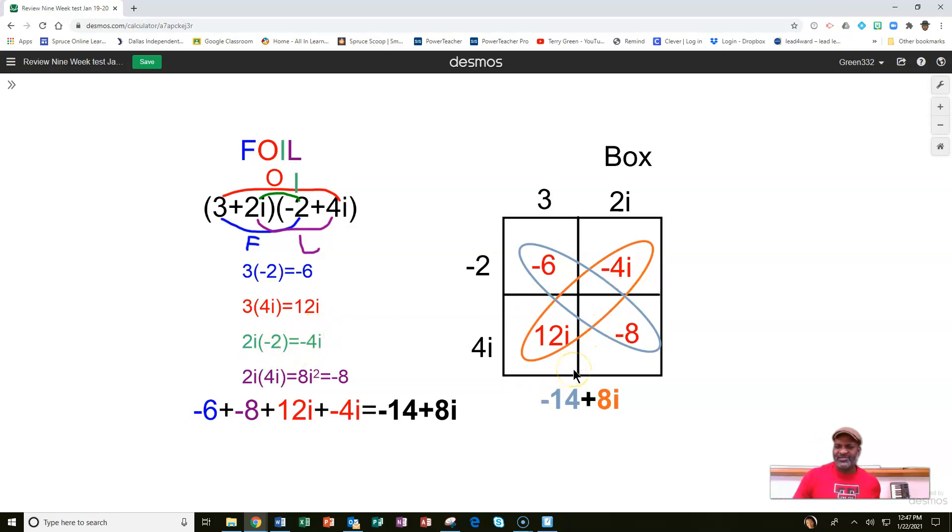Now the box method is basically another way to make sure that you multiply everything the same way. Everything is multiplied. So we've written 3 plus 2i across the top and negative 2 plus 4i on the side. But it doesn't matter which way. You could have had the negative 2 plus 4i at the top and 3 plus 2i on the side. Because multiplication, you can go both directions.